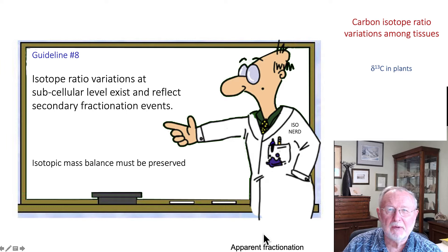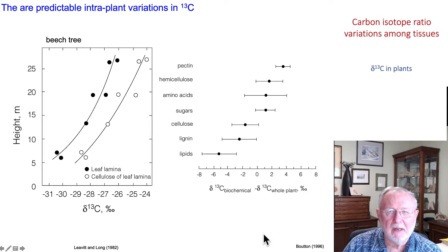There are very predictable intra-plant variations in carbon isotope ratio, such as shown here in the graphic on the left. If zero is the value predicted by the models, then some components such as lignin and lipids are actually depleted relative to the average value in the leaf.